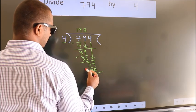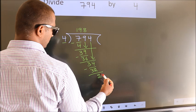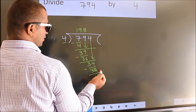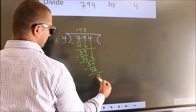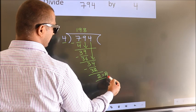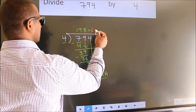Now, we subtract. We get 2. No more numbers to bring it down. So, we stop here. This is our remainder. This is our quotient.